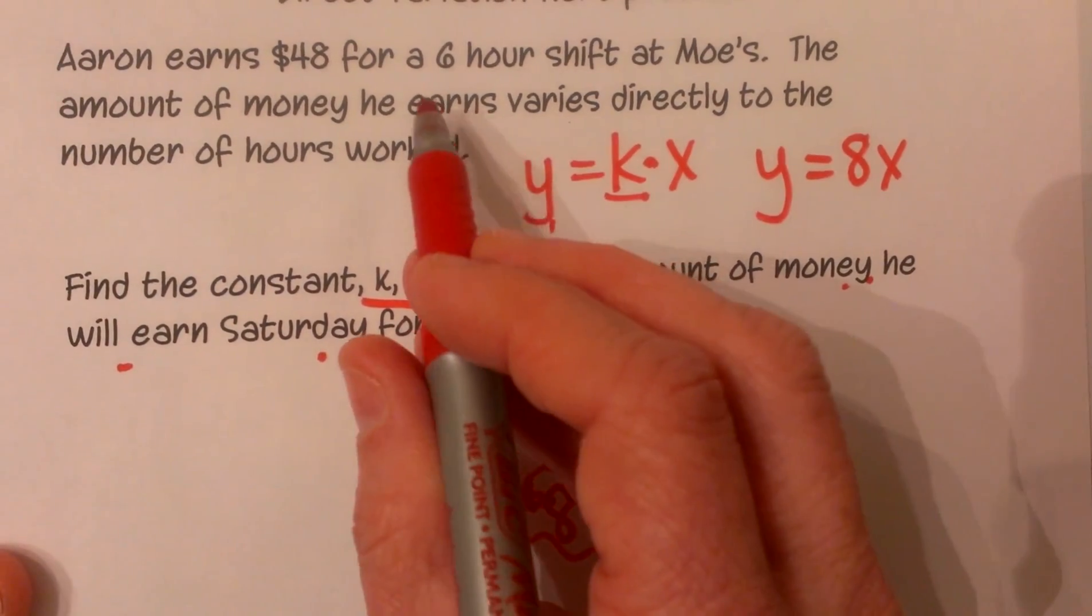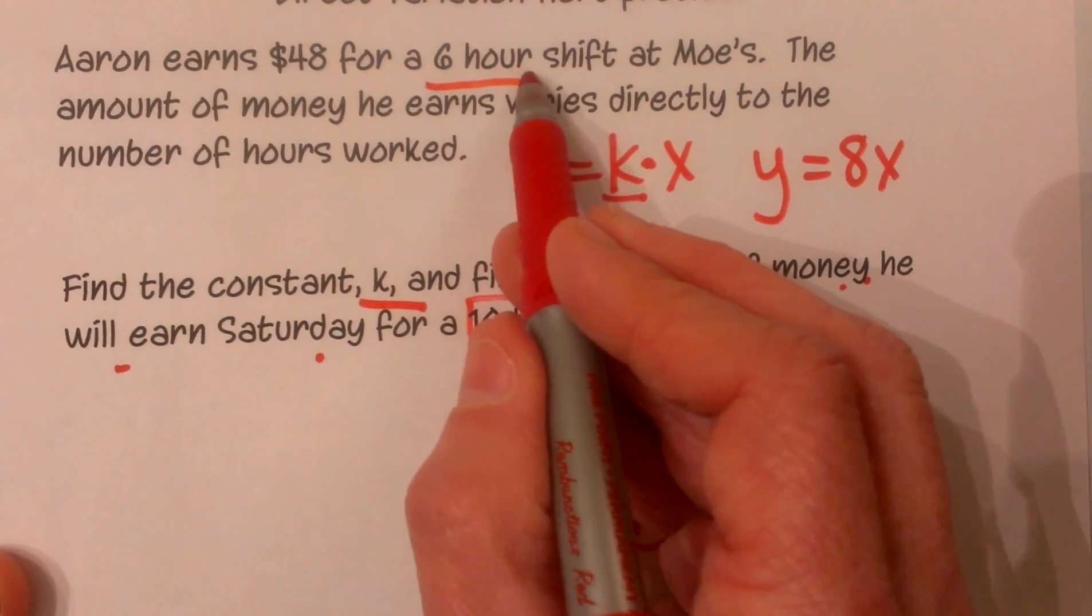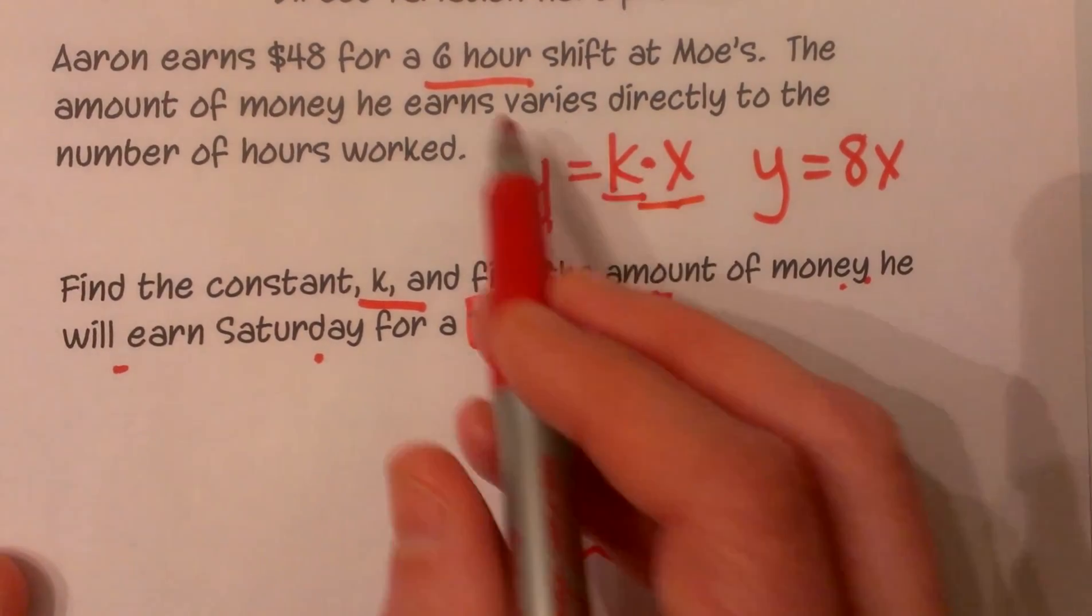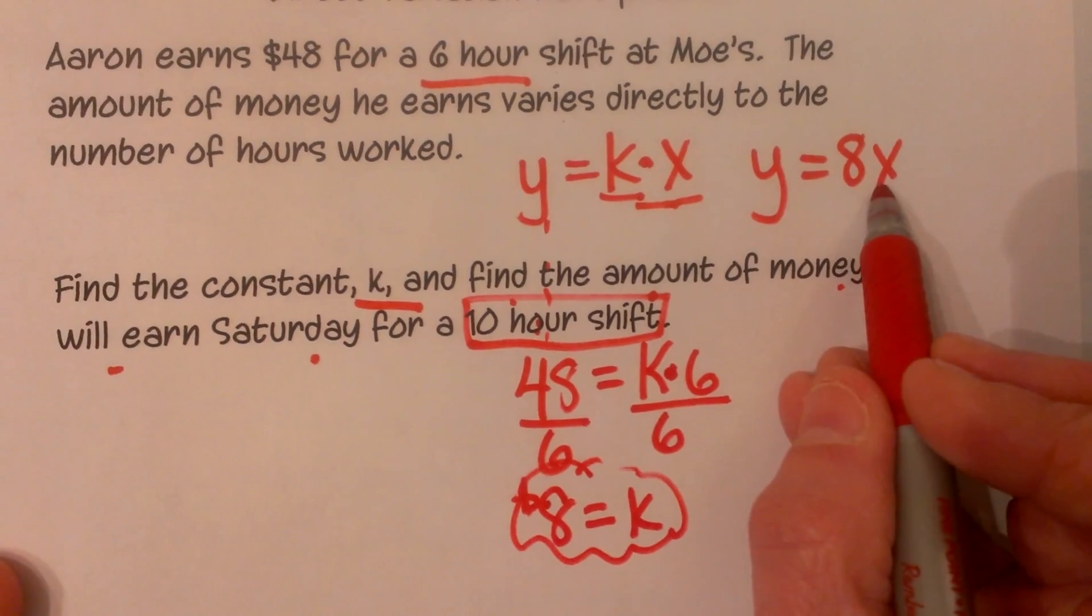So where did we put the hours? The hours is our x value, so I am going to take 10 and plug it in for x.